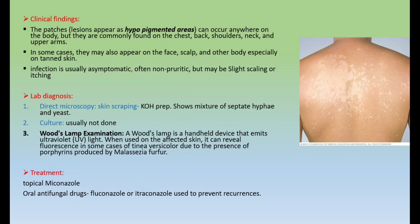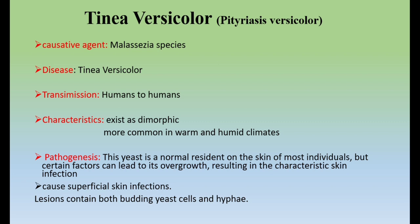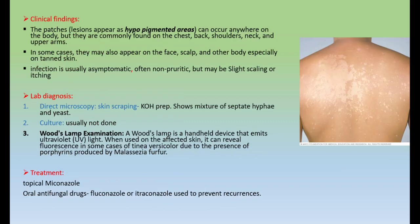Regarding clinical findings, Tinea Versicolor and Tinea Nigra are both of minor importance from an exam point of view; the more important topic was dermatophytosis covered in the last video. The patches in Tinea Versicolor can occur anywhere on the body but are more commonly found on tanned areas: chest, back, shoulders, neck, and upper arms. In some cases they may also appear on the face, scalp, and other body areas. The infection is usually asymptomatic and non-pruritic, but may be slightly scaling or itching.